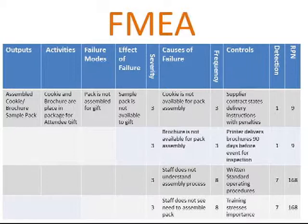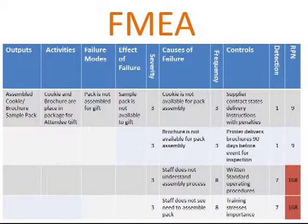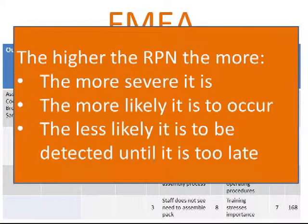It will also allow exhibitors to make decisions on what items to work on first. Typically, anything that is a safety issue and endangers people — whether they're attendees or process partners — should take top priority. At the end of the day, the FMEA, or failure modes and effects analysis, is such a powerful tool that it could save not only the lives of your attendees and process partners, but maybe even your own life.